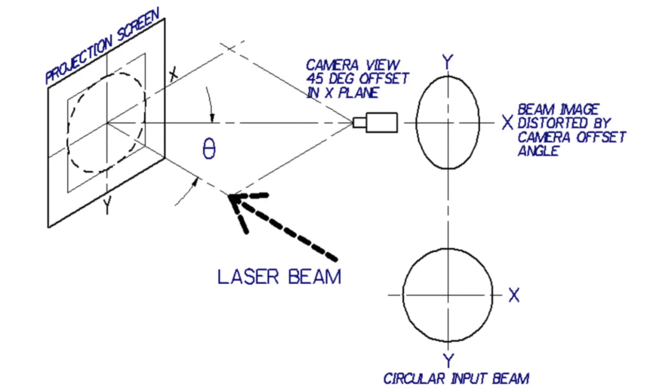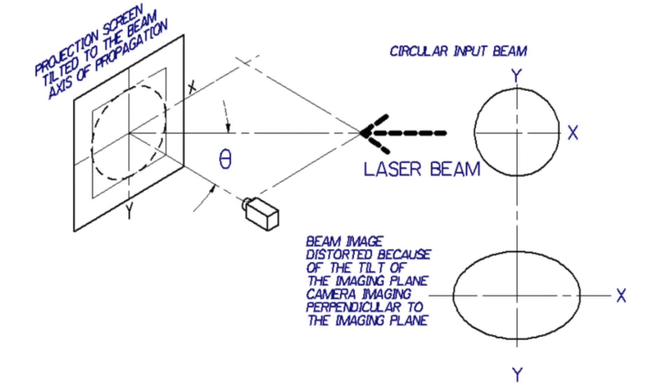Two figures illustrate two possible applications where the camera or the laser is off-axis in the system's x-axial plane. A similar set of figures can be drawn with the camera and laser offset in the y-axial plane.